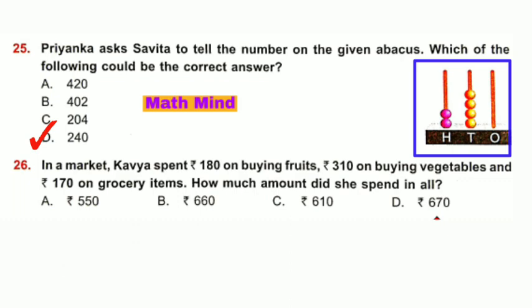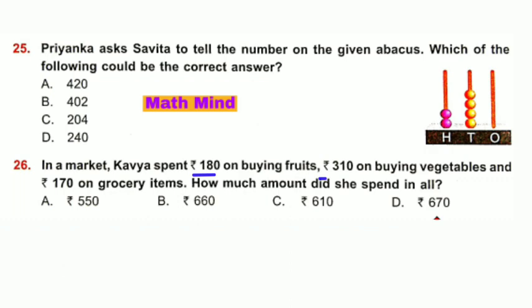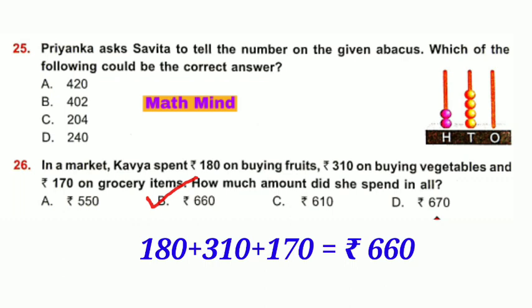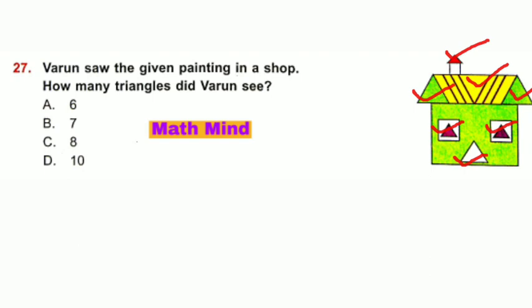Question number 26: In a market, Kabea spent 180 rupees on fruits, 310 rupees on vegetables, and 170 rupees on grocery items. How much did she spend in all? 180 + 310 + 170 = 660 rupees. Option B is correct. Question number 27: Barun saw a painting in a shop. How many triangles did Barun see? Counting the triangles: 1, 2, 3, 4, 5, 6, and 7. Option B is correct: 7 triangles.